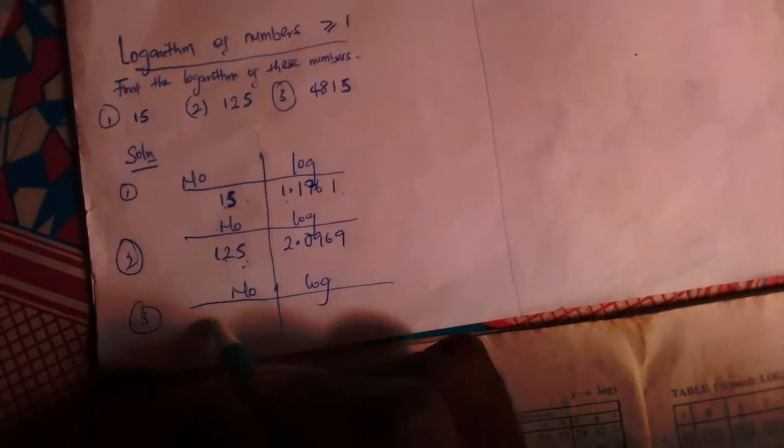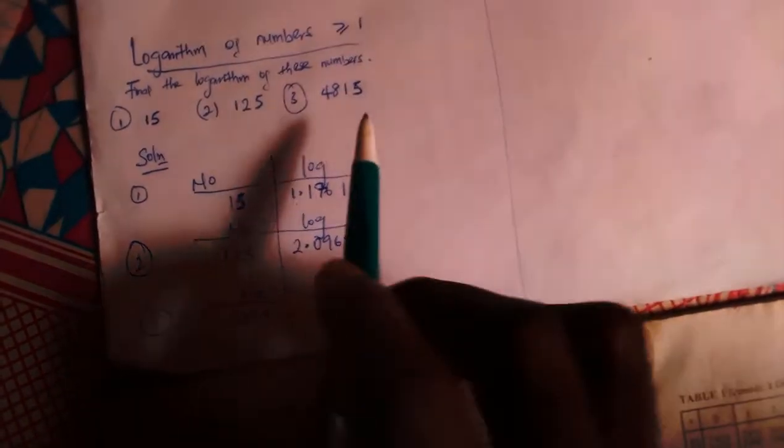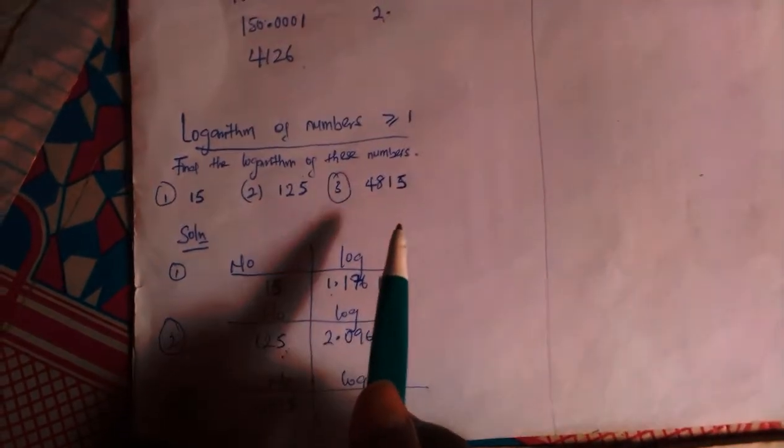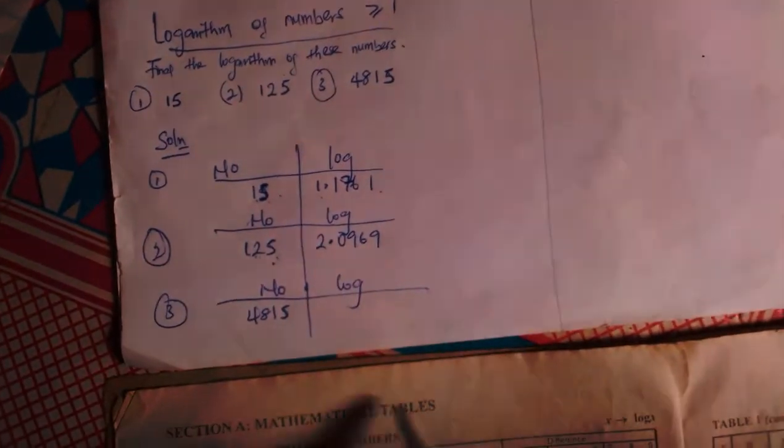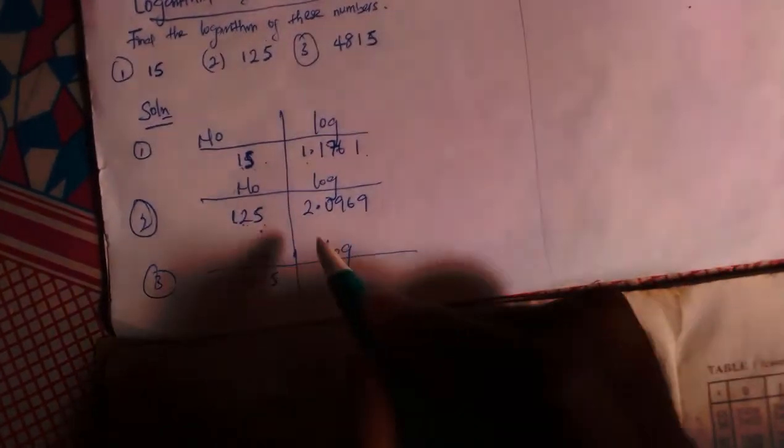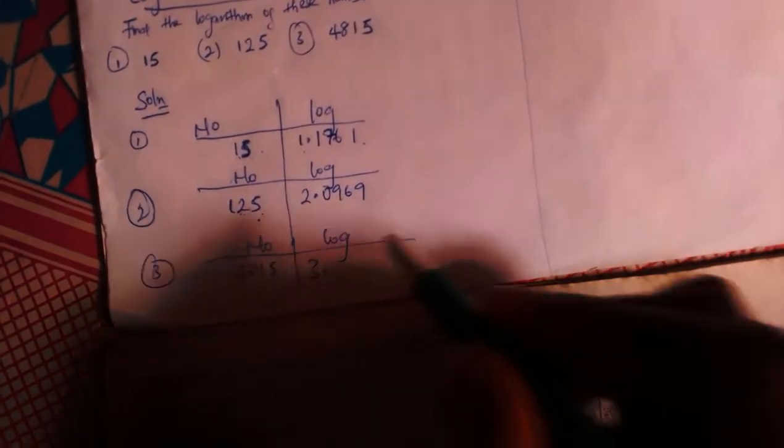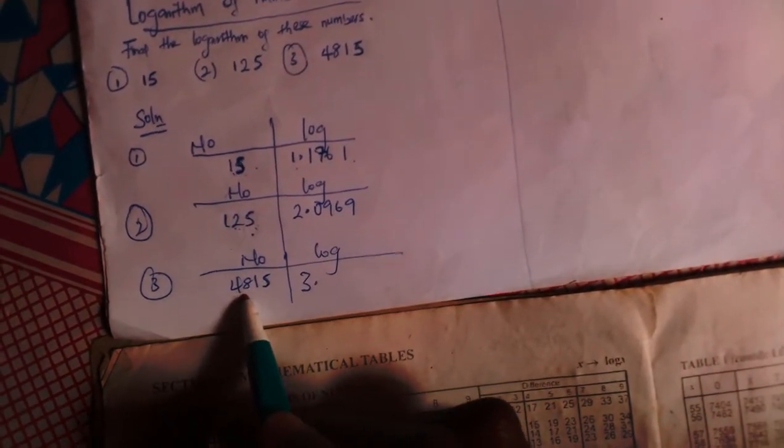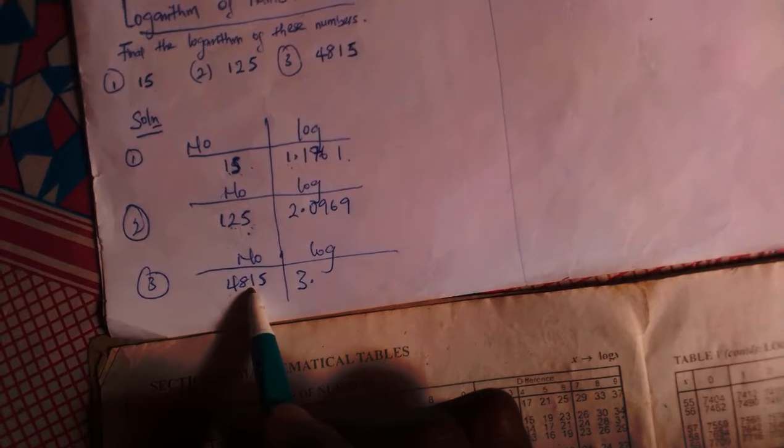And finally we have 4815, which is 4 digits. As you got the last example I gave you in my last class, which was 4126, is similar. Since the number of elements before my decimal is 4, my characteristic here is 3 points. Now in this case, how will I check? I will check 48 under 1, difference 5.